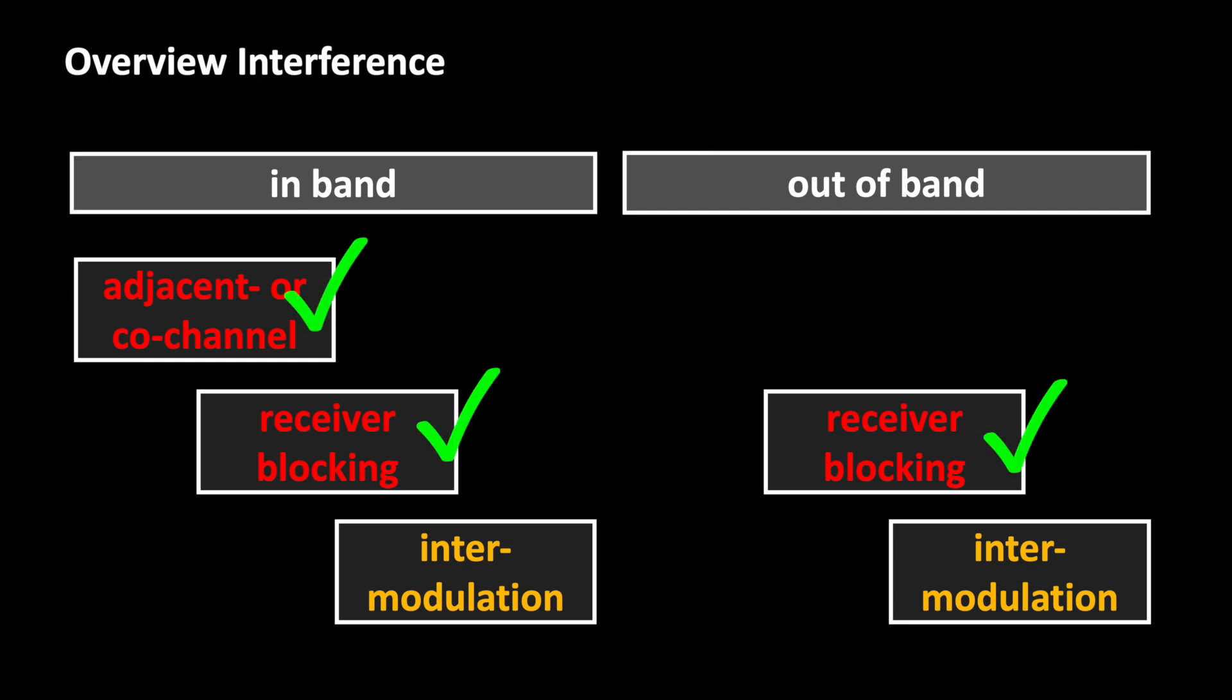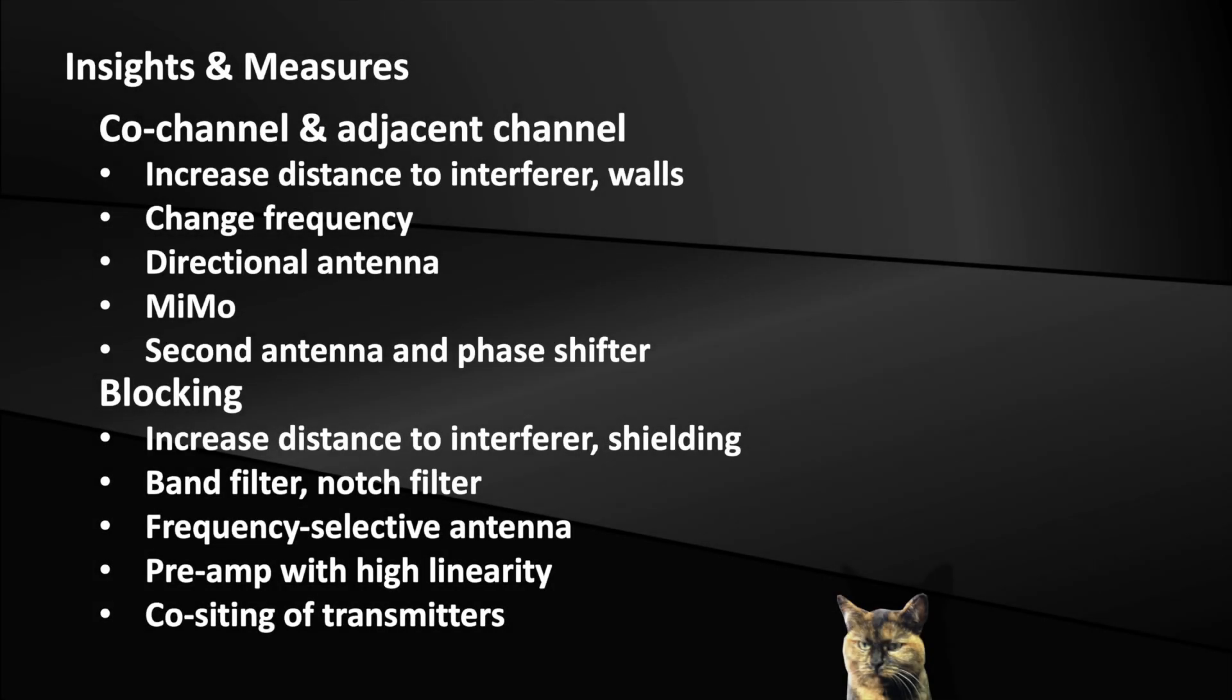We can summarize the insights and measures for channel interference and blocking as follows. A greater distance from the source of interference is improving SNR and blocking. Similar effects can be achieved by shielding and walls.